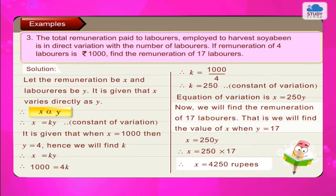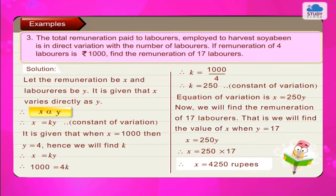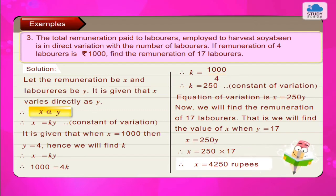Now we will find the remuneration of 17 labourers. That is, we will find the value of x when y = 17. x = 250y. Therefore x = 250 × 17. Therefore x = Rs. 4250.